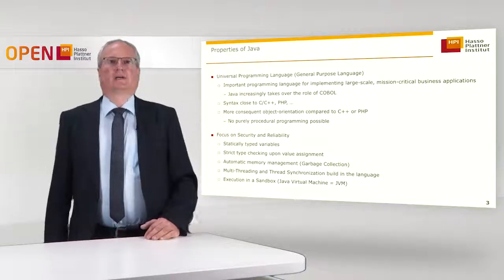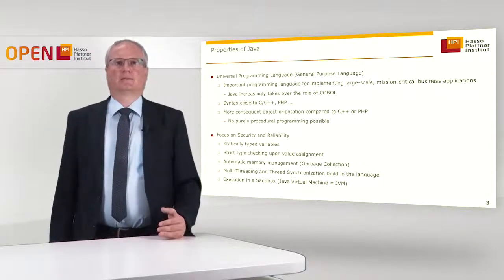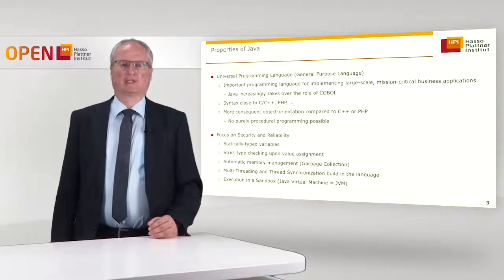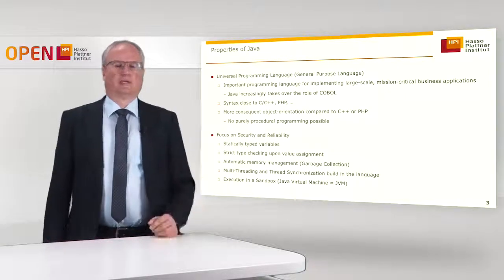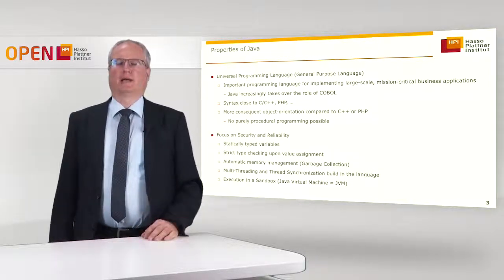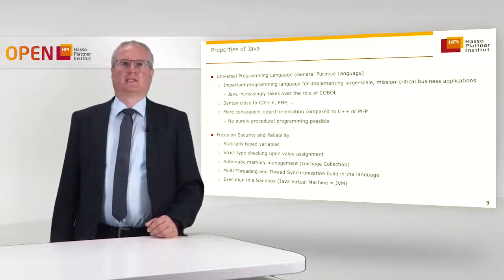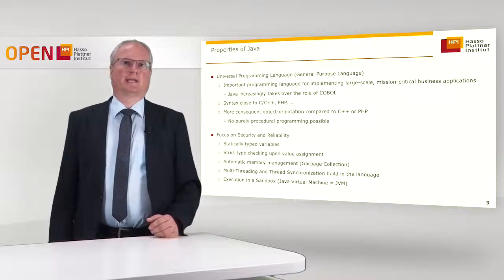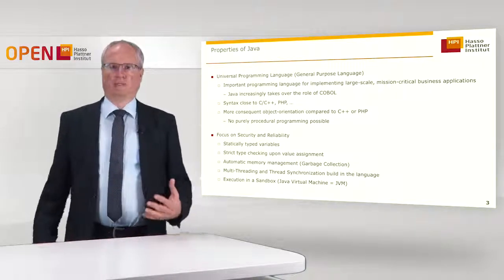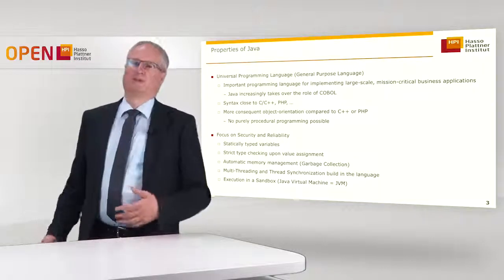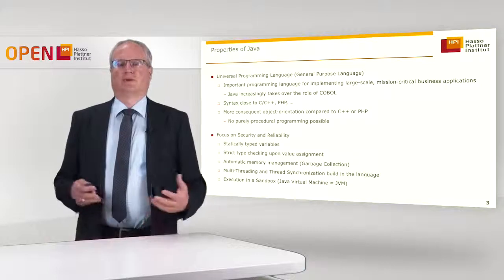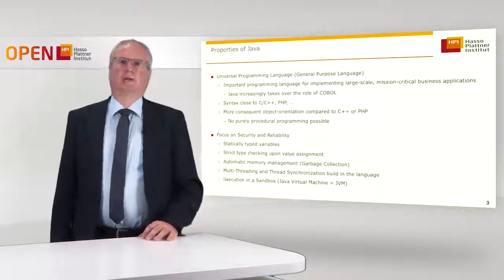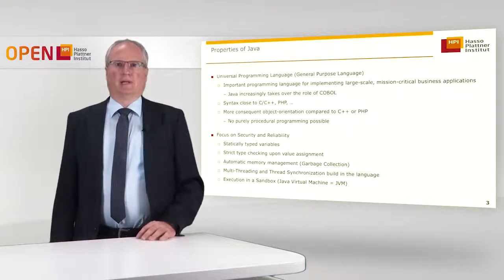The main features of Java are that Java is really a universal programming language compared to others like PHP or scripting languages, which usually are for a special application domain like web development. Java is a general purpose language, which means that it can be used for many different purposes — mobile development, business applications, even embedded applications partially.